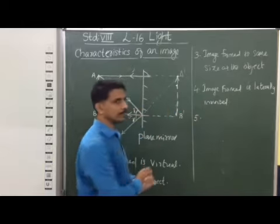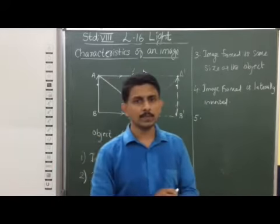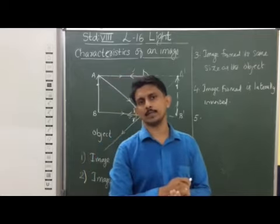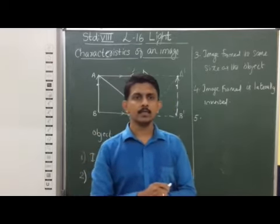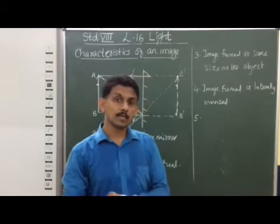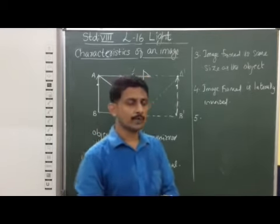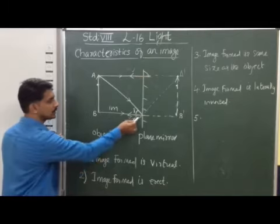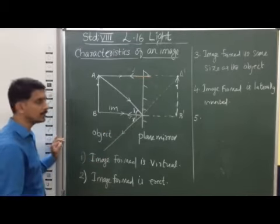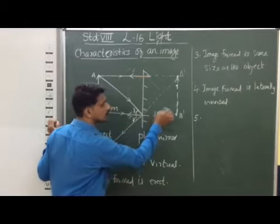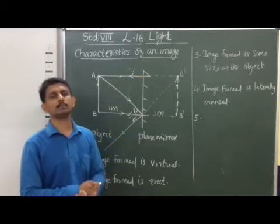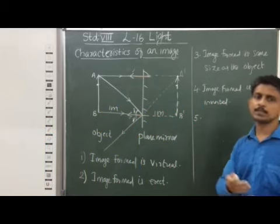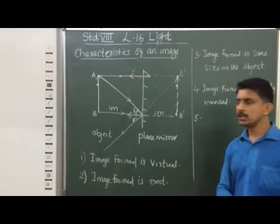The fifth property: suppose you are standing in front of the plane mirror and moving towards the mirror — you can see that the image is also approaching towards the mirror. The image is formed behind the mirror as the object is in front of it. For example, if the object is 1 meter in front of the mirror, the image is also forming 1 meter behind the mirror. So the fifth property is that the image is formed the same distance behind the mirror as the object is in front of it.